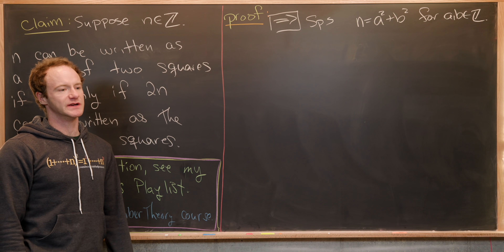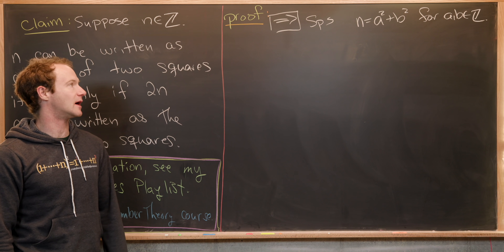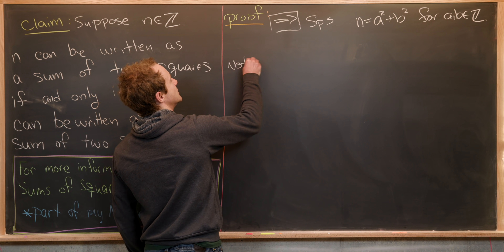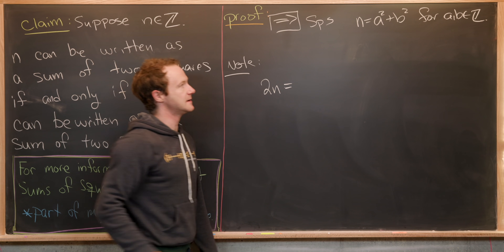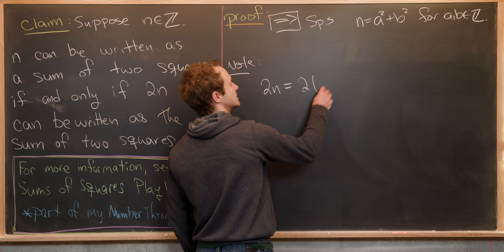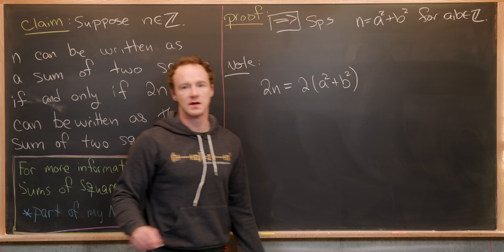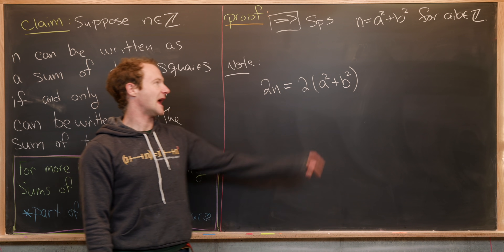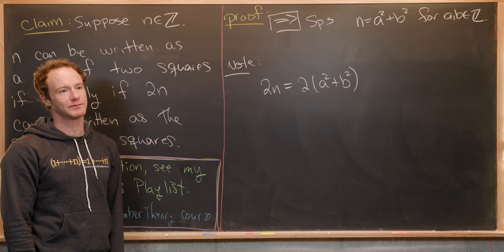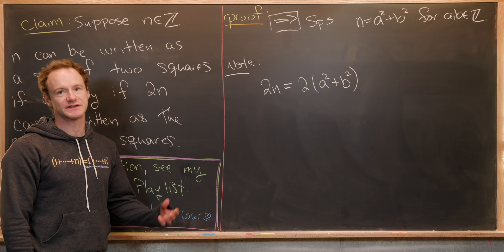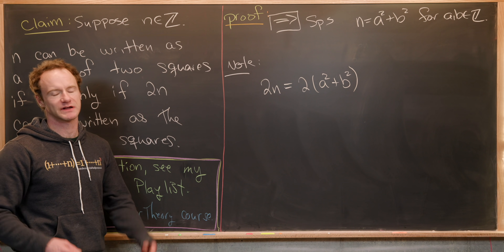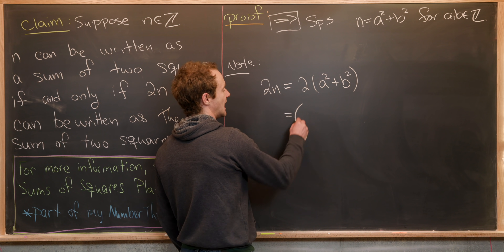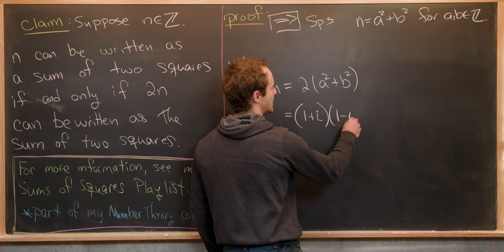There are a bunch of ways to do this, but the way I want to do it uses a brief excursion into complex numbers. Notice that two times n equals two times a squared plus b squared, by the fact that n is a sum of squares. Now I want to factor two and a squared plus b squared using complex numbers — specifically numbers within the Gaussian integers. So I'm going to factor two as one plus i times one minus i.